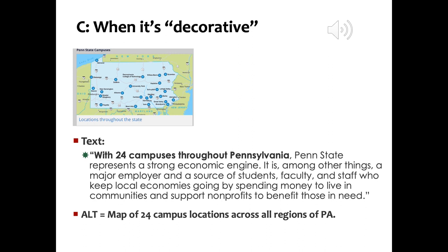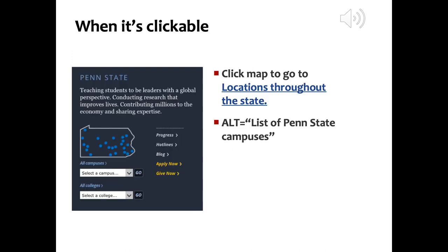This is a more abstract version of the campus map and it's actually a link to the campus location page. Since it is a link, the alt text should describe where it's going and not the image itself. The alt text here is 'list of Penn State campuses.'